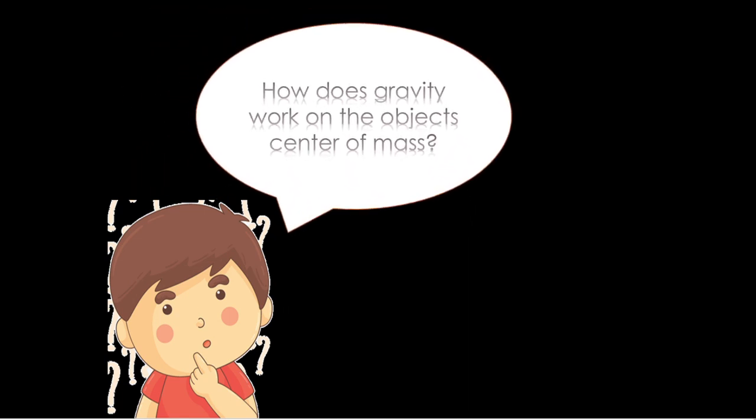Now the question arises: how does gravity work on the object's center of mass? It's simple. It works in a straight line downwards. The line of gravity is the line of pull of gravitational force or gravitational vector. It acts downwards from the point of application.